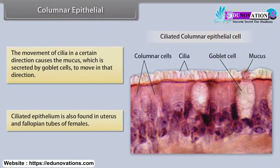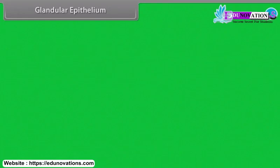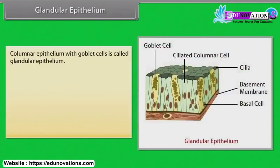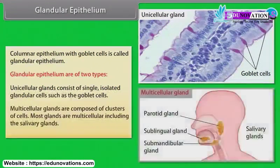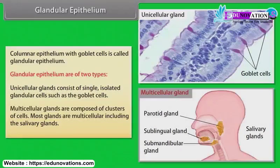Ciliated epithelial cells are also found in the uterus and fallopian tubes of females. Columnar epithelium with goblet cells is called glandular epithelium. Glandular epithelium is of two types: unicellular glands consist of single, isolated glandular cells such as goblet cells; multicellular glands are composed of clusters of cells. Most glands are multicellular, including the salivary glands.